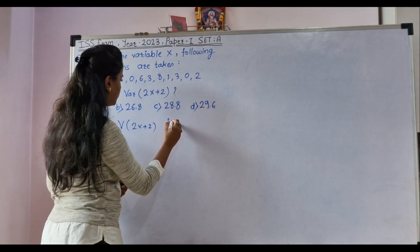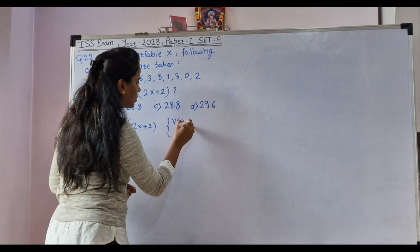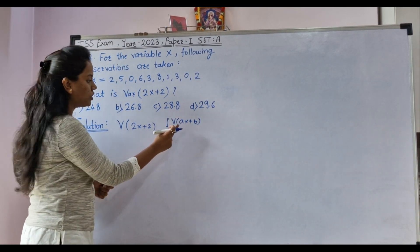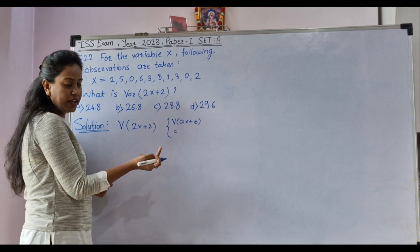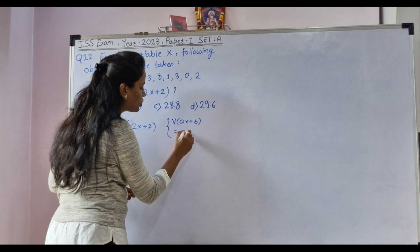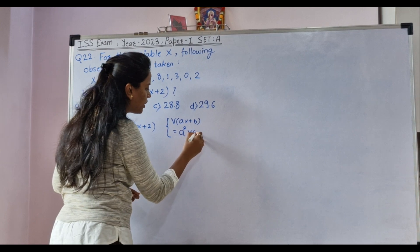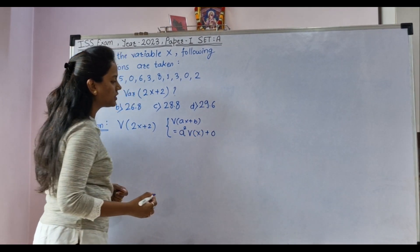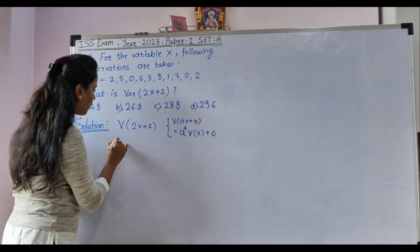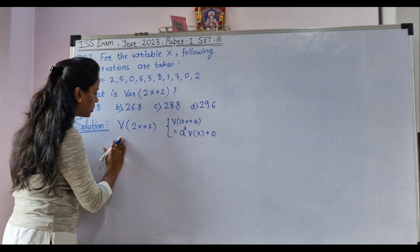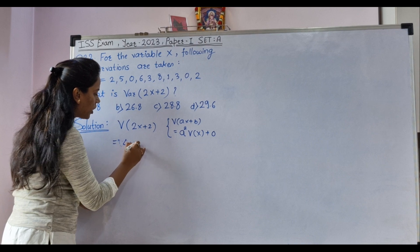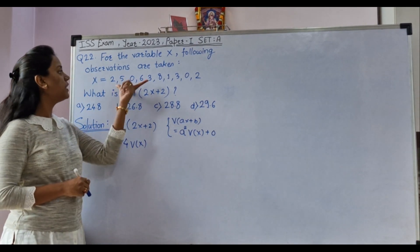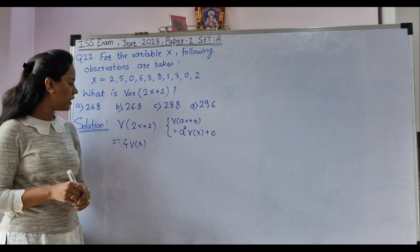Here we know one of the properties of variance of AX plus B. What it says? When we take constant outside the variance, we have to square it. So, it is A square variance of X plus variance of constant is 0. So, what we want to calculate actually? Four times variance of X we want to calculate using this data.